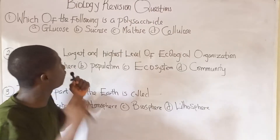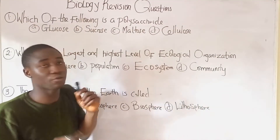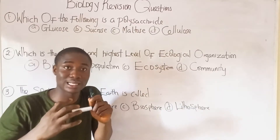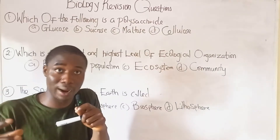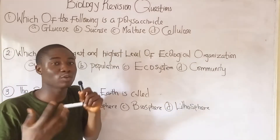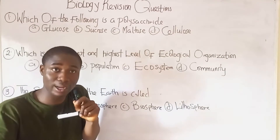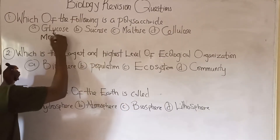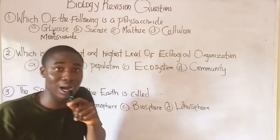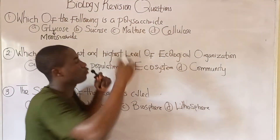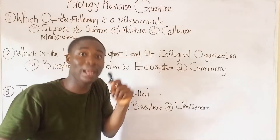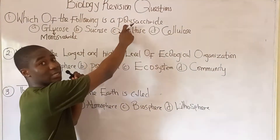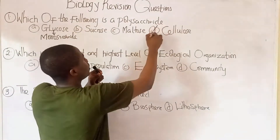Question one asks: which of the following is a polysaccharide? A polysaccharide is a carbohydrate made up of complex units of monosaccharide units. Examples include cellulose and glycogen. Option A, glucose, is not a polysaccharide but rather a monosaccharide — a simple sugar. The correct answer is option D: cellulose, which is a polysaccharide.